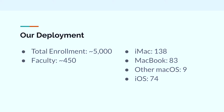Our deployment: we have about 5,000 folks at our university, mostly undergrad with a little graduate. About half live on campus. 450 faculty and about the same number of staff. For our Mac deployment, we've got 138 iMacs, most in Mac Labs, about 83 MacBooks mostly MacBook Pros, plus a hodgepodge of Mac minis and garbage cans and other stuff, and about 74 iOS devices in our Jamf Pro deployment.